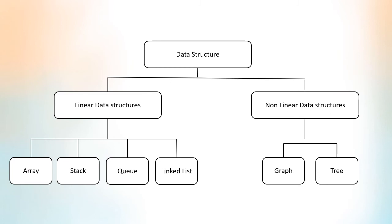Let us summarize. Data structures are classified into linear data structures and nonlinear data structures. Linear data structures arrange elements sequentially — examples are array, stack, queue, linked list, etc. Nonlinear data structures do not arrange data elements sequentially — examples are graphs and trees.